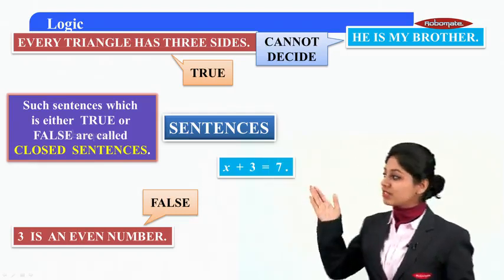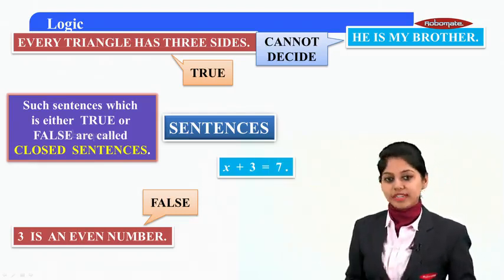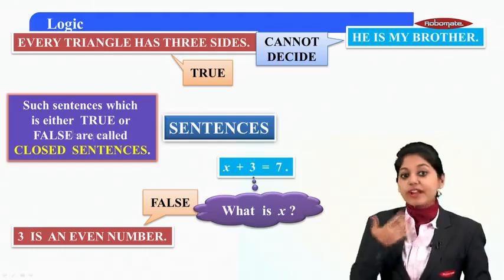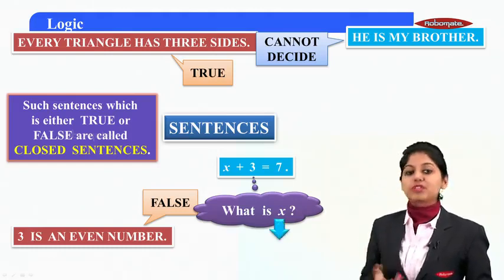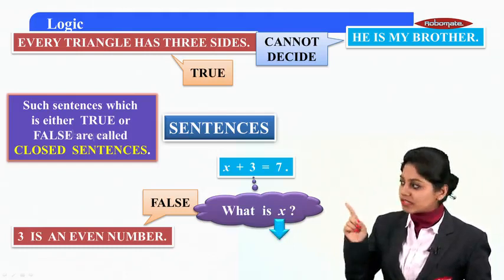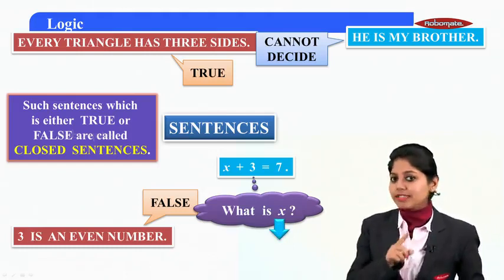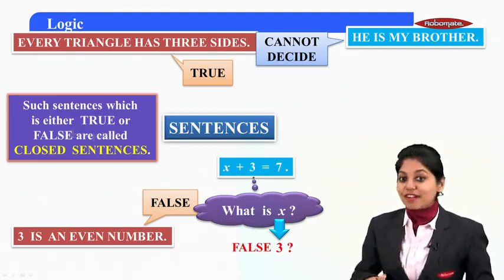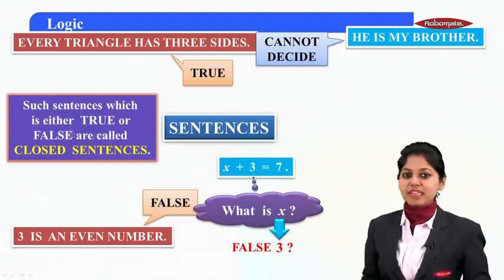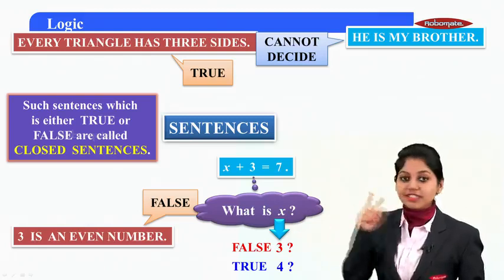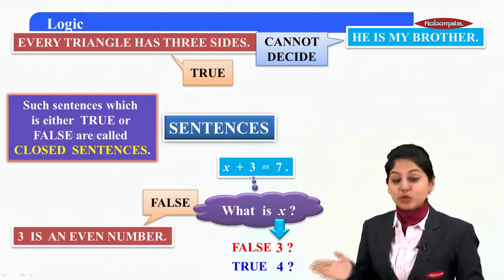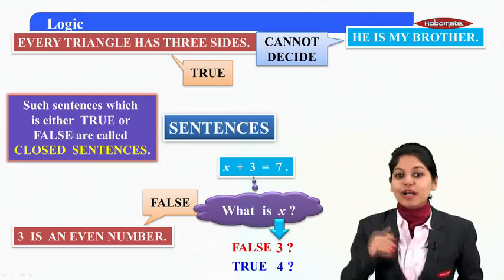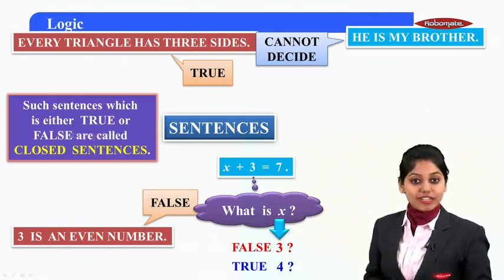The next example: x plus 3 equals 7. What is x here? No value is given. If I assume x is 3, then 3 plus 3 gives you 6, not 7 — so it's a false sentence. Now if I change the value of x to 4, then 4 plus 3 gives you 7 — so it is a true sentence. For different values of x, you get different truth values.